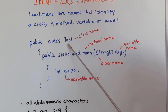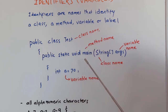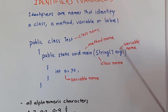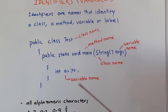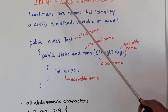An identifier may constitute a class name, a method name, a variable name, or a label. When writing an identifier, you can use alphanumeric characters (capital A to Z, small a to z, 0 to 9), a dollar symbol ($), and an underscore (_). You can start an identifier with any alphabet but not with a number. The name cannot have a space — if you want to extend the name, use an underscore.